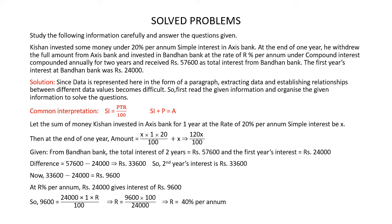Now at Bandhan Bank, the rate of interest is R% per annum. So at R% per annum, Rs 24,000 gives an interest of Rs 9,600. We know that interest is equal to principal multiplied by time multiplied by rate of interest divided by 100. So 9,600 is equal to 24,000 multiplied by 1 multiplied by R divided by 100. On solving this, we get the rate of interest as 40% per annum — that is, the rate of interest at Bandhan Bank is 40% per annum.